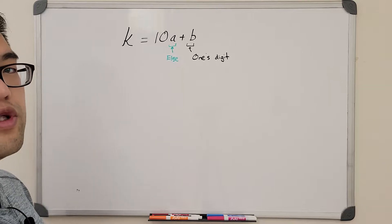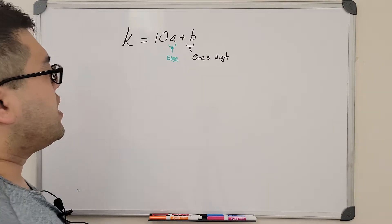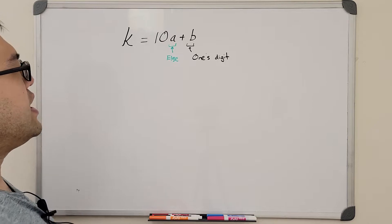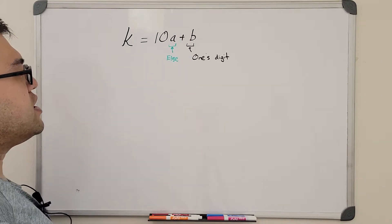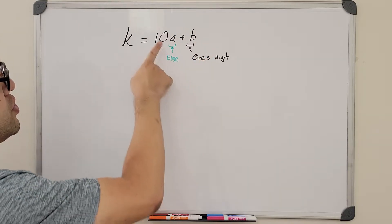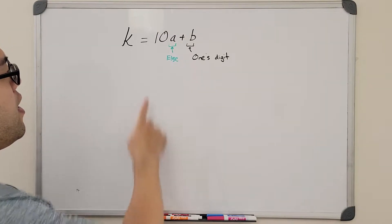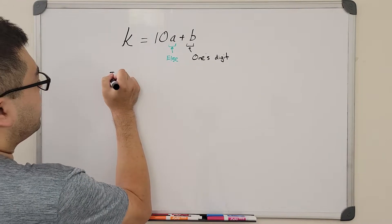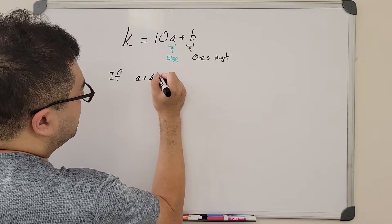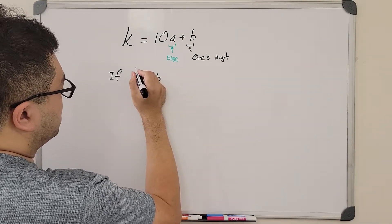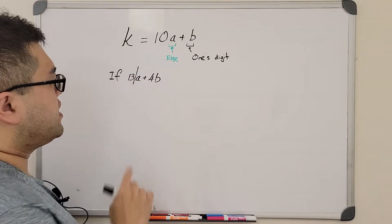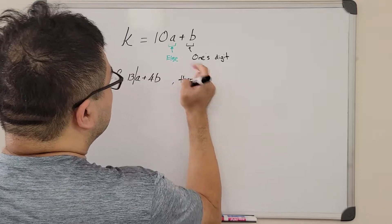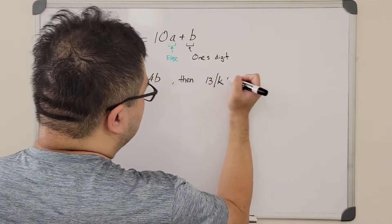Now let's talk about the trick for checking multiples of 13. In the short video I claimed that we can multiply the last digit by 4 and then add 4b to the a part. So we're saying that if a + 4b is a multiple of 13 — written as 13 divides a + 4b — then the original number k is also a multiple of 13. In fact, it is an if and only if.